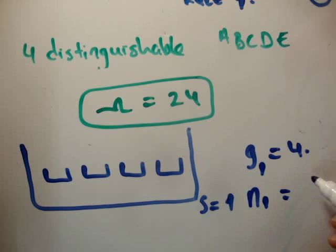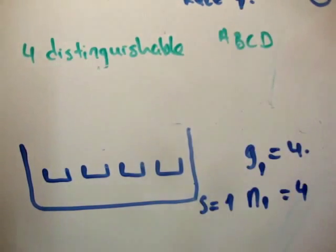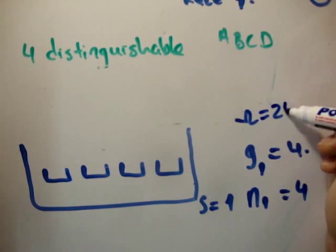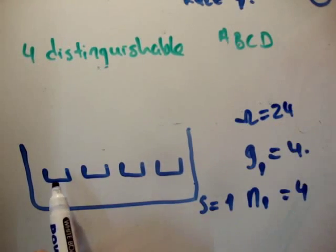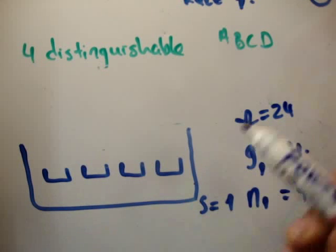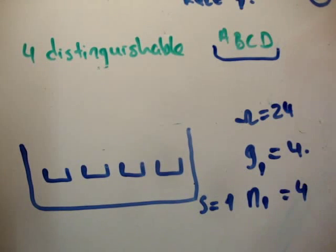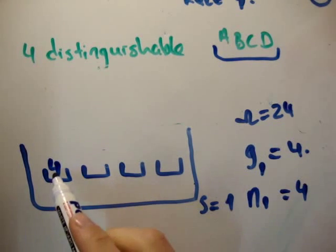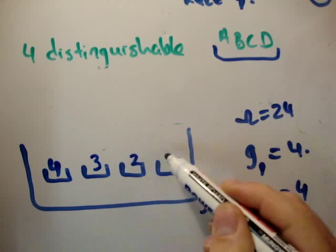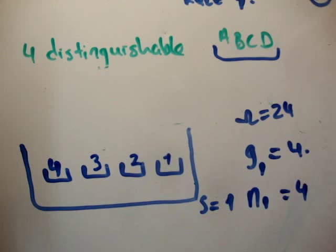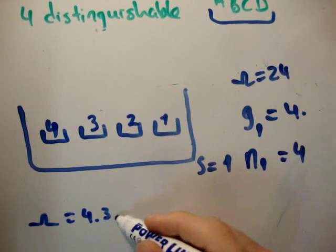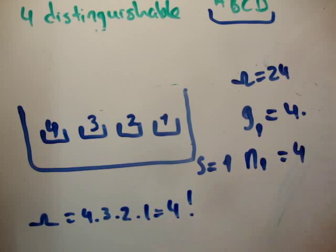So you have four particles, A, B, C, and D. And I'm saying the multiplicity is 24. So how do we get the multiplicity as 24? Well, the answer is, look at the first micro box. We can put four, any one of these four particles can go in here. So this is four choices. Well, if one particle is in here, then there are three remaining for this box, two for this, and one for this. And that means the multiplicity is going to be equal to 4 times 3 times 2 times 1 is equal to 4 factorial.